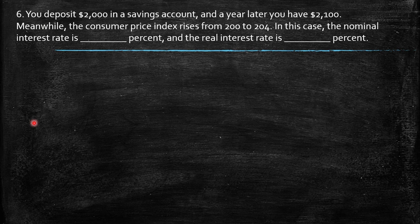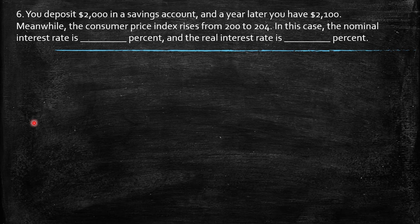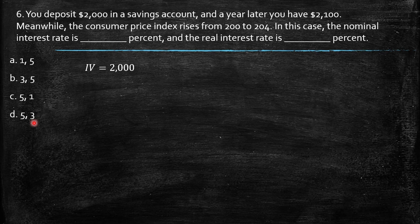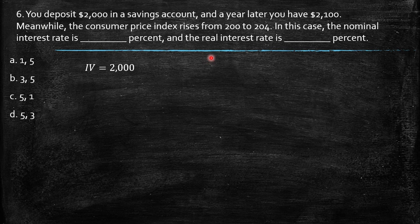Meanwhile, the consumer price index rises from 200 to 204. In this case, the nominal interest rate is and the real interest rate is. So let's start to clarify or set the question. So then we have the initial value, which is exactly 2000, the final value, which is 2100.